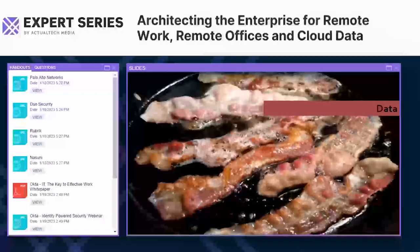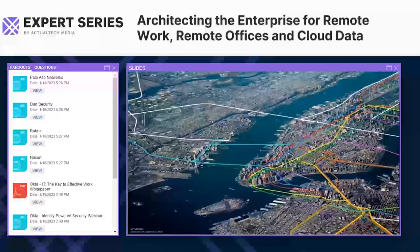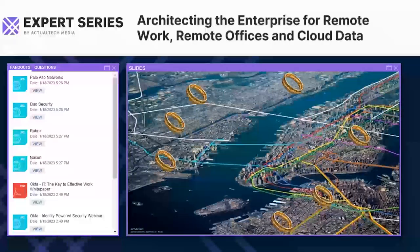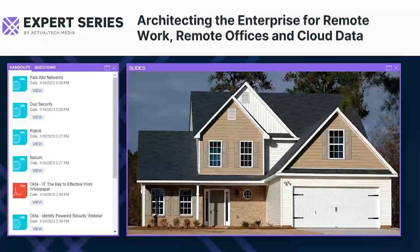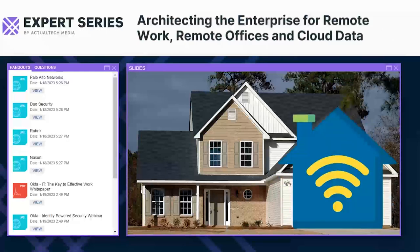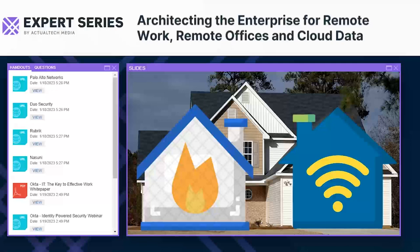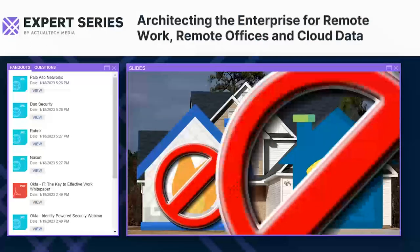Going back to our new threat surface with all our users — let's look at how we protect it. One of the nodes in our threat surface looks like a house, because that's exactly what it is. Your people are working at home, connected to the internet using residential-quality internet access and protected by a residential-quality firewall. That's okay for personal use, but is it sufficient for corporate data? Absolutely not.